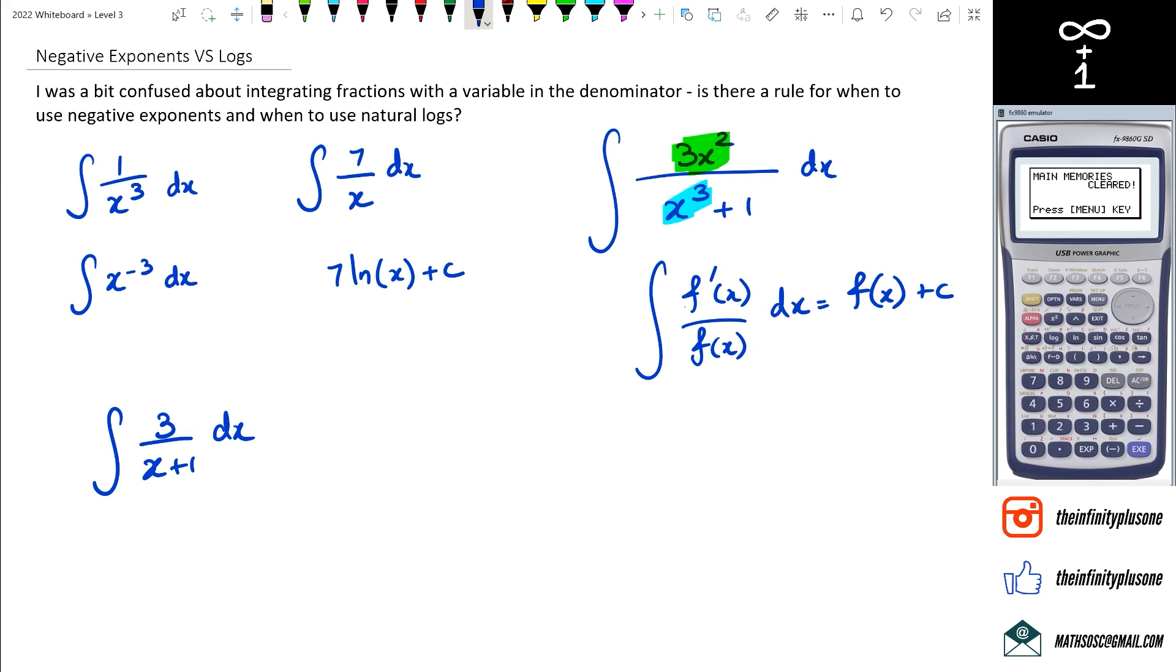Again in this case, when you integrate this you're going to end up with 3 ln of x plus 1 plus c. And the last one, of course, is I always forget this one.